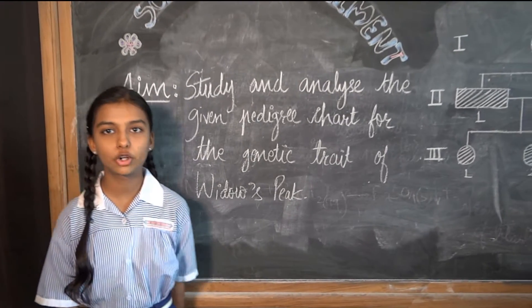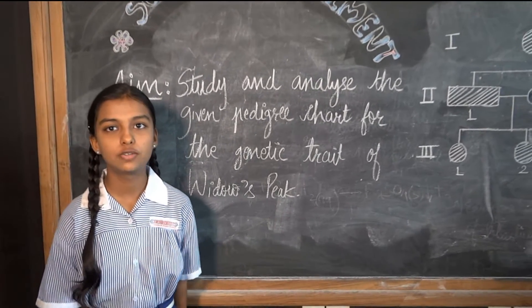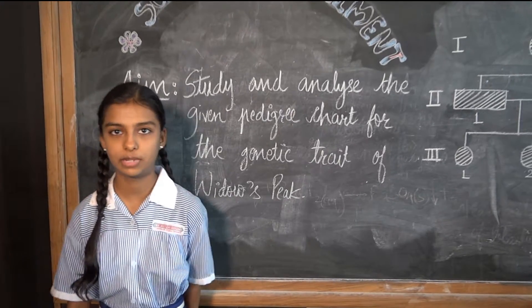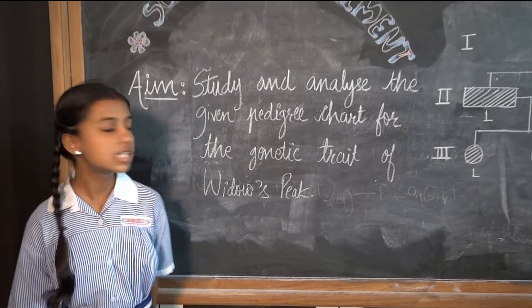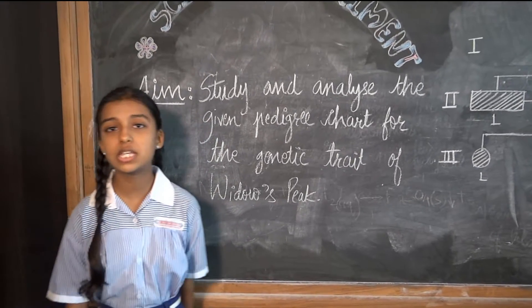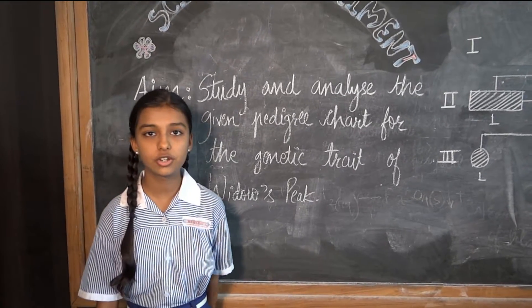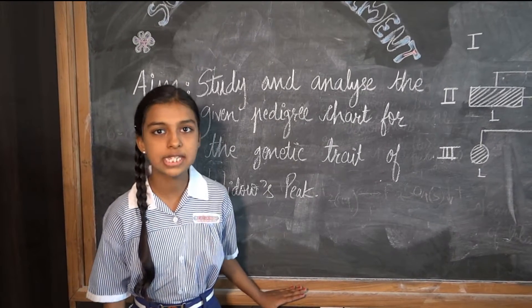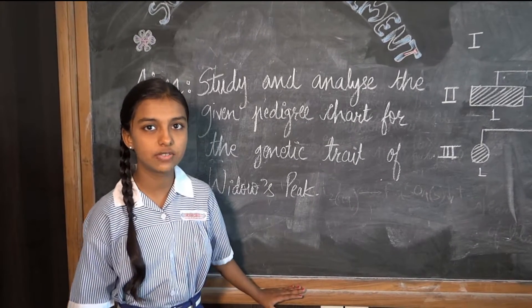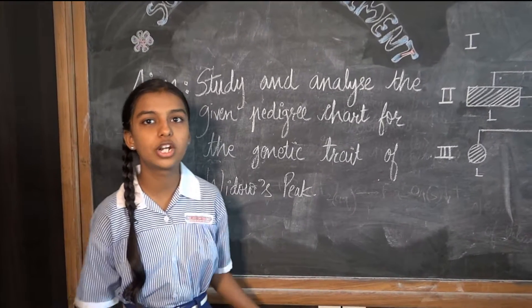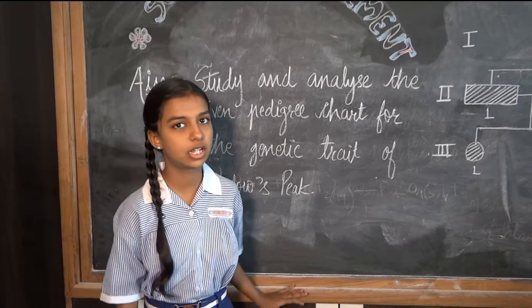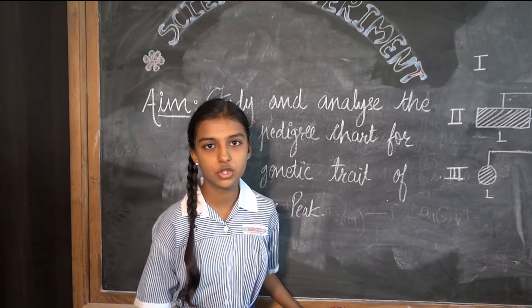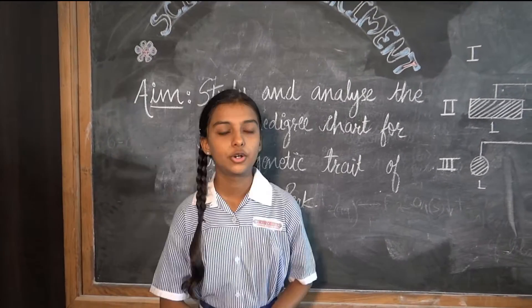A pedigree chart is the record of occurrence of a genetic trait across several generations in a human family. In this case, widow's peak is the given genetic trait, for which expression in homozygous and heterozygous individuals results in the formation of a V-shaped front hairline, whereas the straight hairline appears in individuals without the dominant allele.